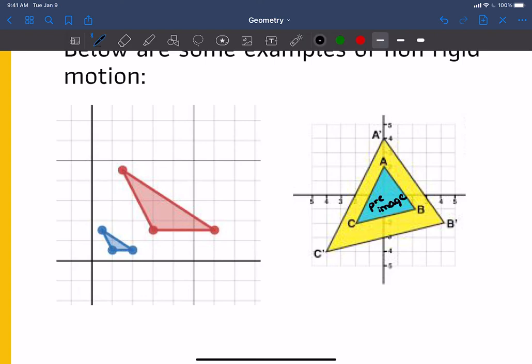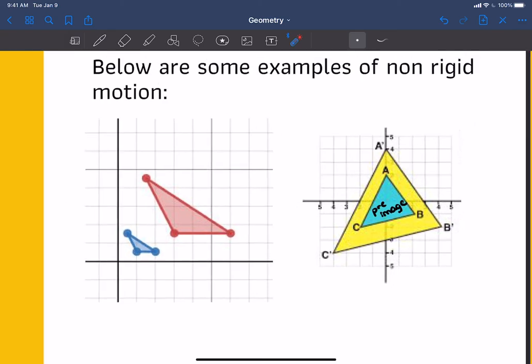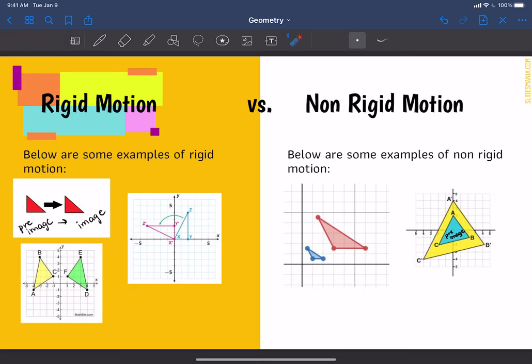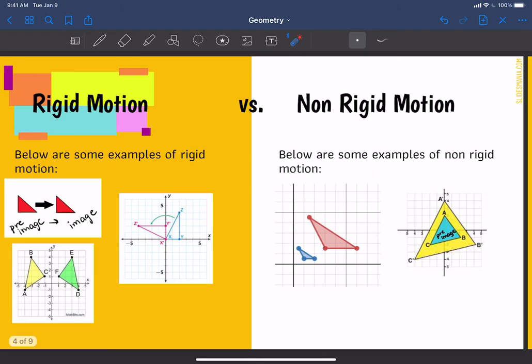So pre-image, remember, is before you do any transformation. So pre, before. And the yellow triangle on the outside is the image. Once you do a specific transformation on a shape, then you would put a little apostrophe next to each of the letters to indicate or show that you've done a transformation to it, that you've changed the shape in some way.